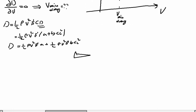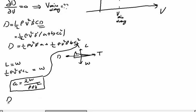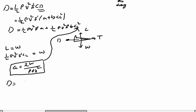We assume the aircraft is in steady level flight, so thrust equals drag and lift equals weight. In the vertical axis: W = ½ρv²S·CL. From this, we solve for CL = W / (½ρSv²) = 2W / (ρSv²). Substituting back, the drag equation becomes: D = ½ρv²S·a + 2bW² / (ρSv²).